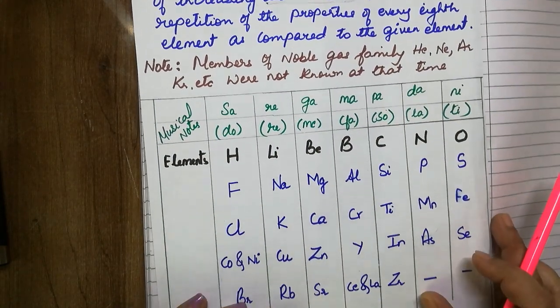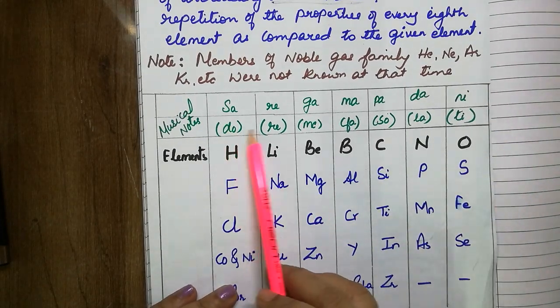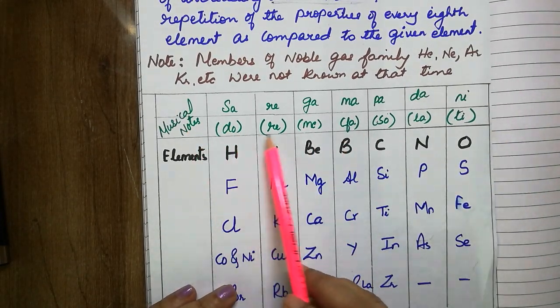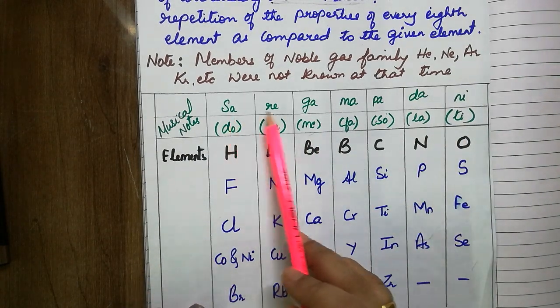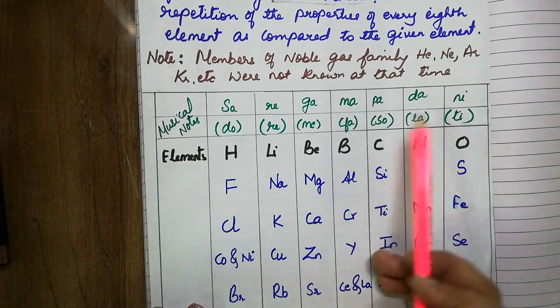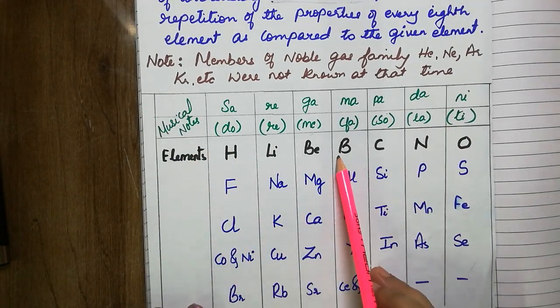Now if we see here, he gave the names for this as musical notes: Do, Re, Mi, Fa, So, Lati, and later it was named as Sare, Gamma, Pada, Nisa. So 7 musical notes.